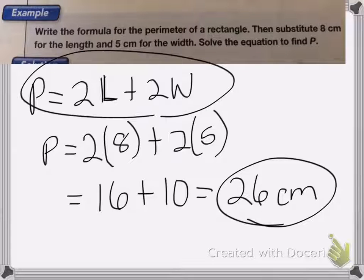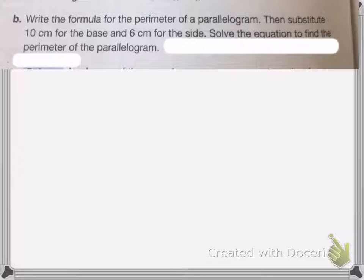So that's the perimeter. You'll need both of these steps for the four full points. Okay, on this one, it says write the formula for the perimeter of a parallelogram and then substitute 10 centimeters for the base and 6 centimeters for the side and then solve it.